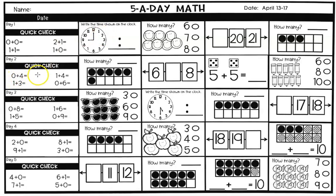Day two quick check: zero plus four, one plus three, one plus four, and zero plus six equals. Then using a 10 frame, count the black circles and write how many. Fill in the missing number — six, blank, eight — what number comes after six and before eight? Use the dice and add them together. For the last block, count the pencils and color in six, eight, or ten.